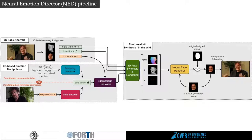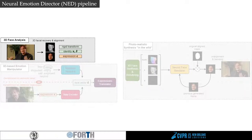Our pipeline consists of three different stages. Given an input video, we first segment the depicted face and register it to a parametric 3D face model using the recent DECA method, which disentangles the face expressions from the identity and camera pose. This way, we map the emotion translation problem from the image space to the space of 3D expression parameters.